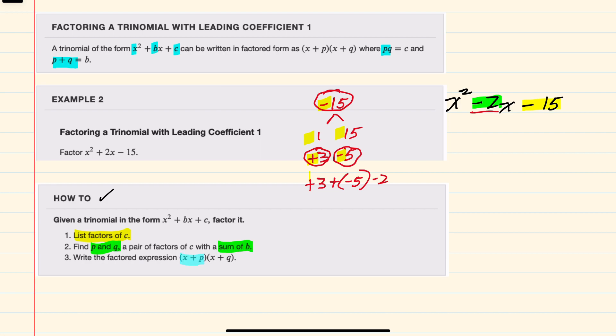I can write this in its factored form by saying I have x plus p, so x + 3, and then x plus q, but our q is -5, so x - 5. This is the factored form of our trinomial.